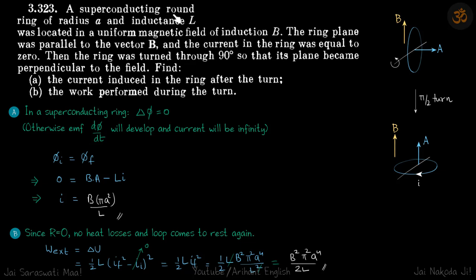So here we have a superconducting round ring of radius A and inductance L. It's located in a uniform magnetic field of induction B like this. So initially the plane of the ring is parallel to field and later plane of the ring is perpendicular to the field.